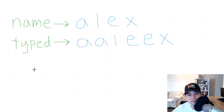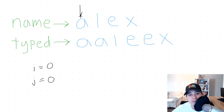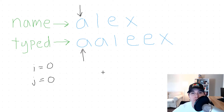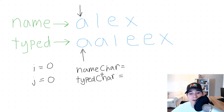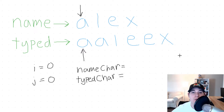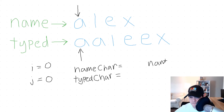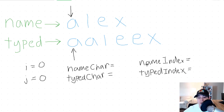We're going to need a couple of different pointers to solve this problem. The first two pointers will be I and J. Our I variable is a pointer that starts at index zero and loops over all the characters in the name string. Our J variable starts at index zero of our typed string and loops over all the characters in that string. Another two variables we'll need are name character and typed character, which keep track of the current character we're looking at using I and J. The last two variables are name index and typed index.